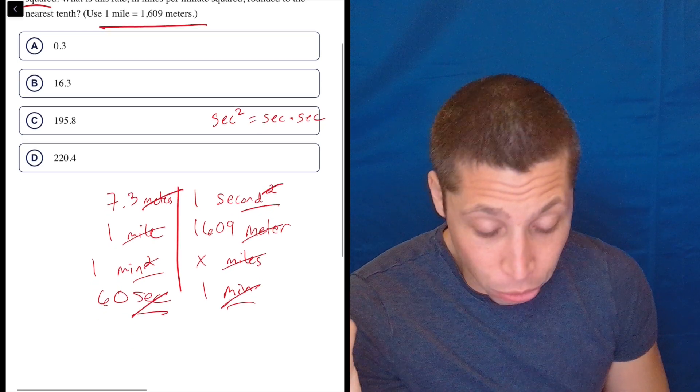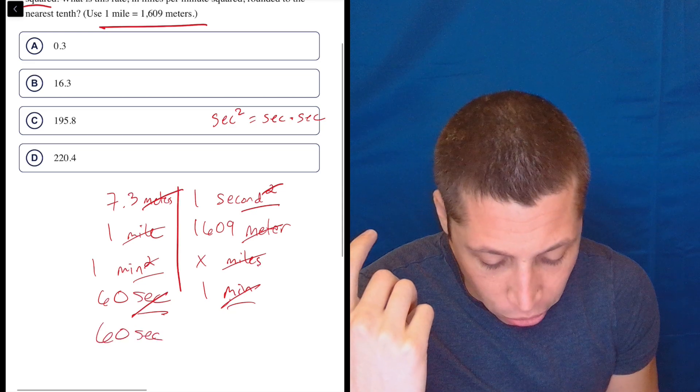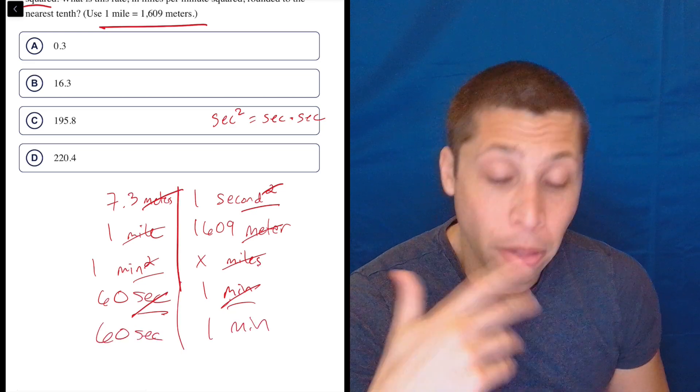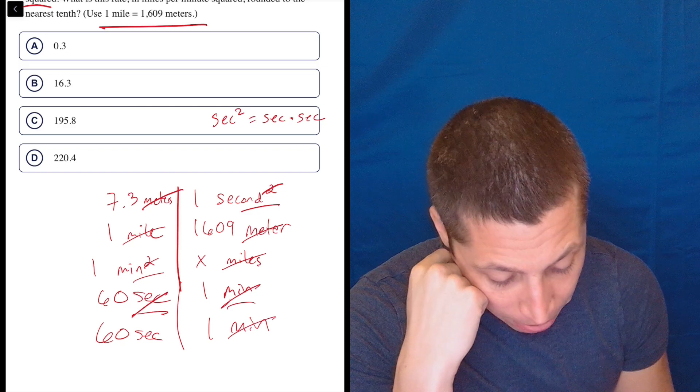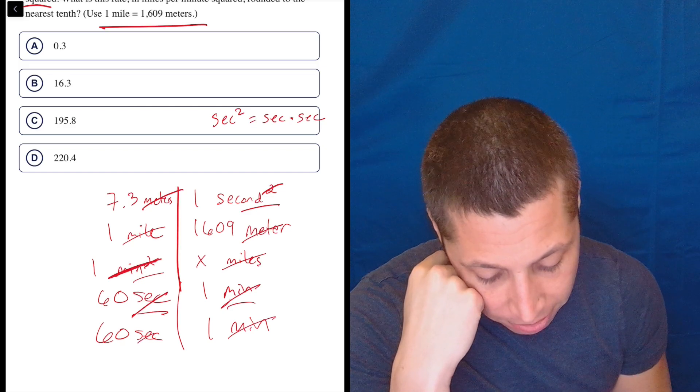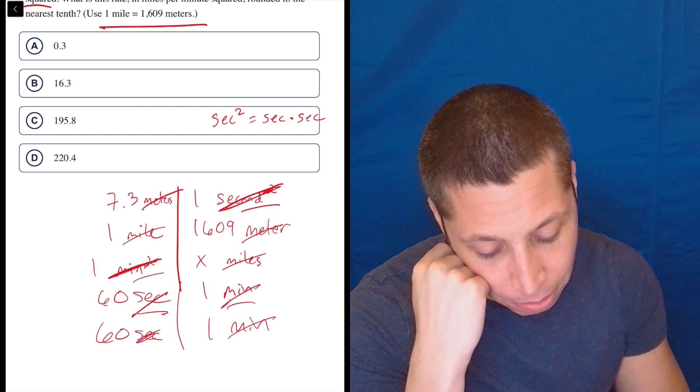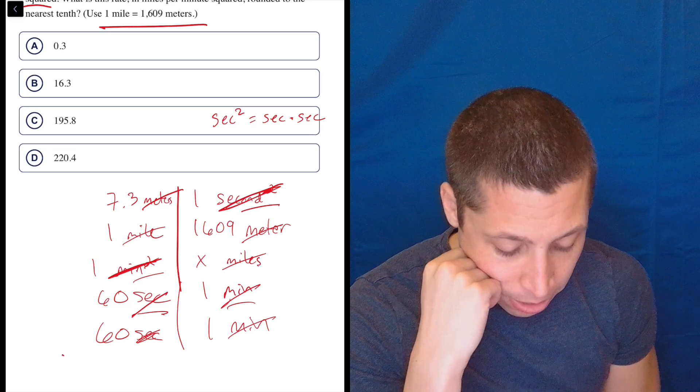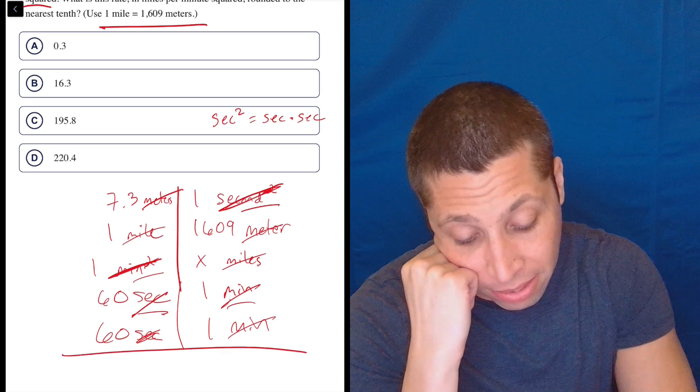So the solution is simple. We just do the same conversion twice because I need to get rid of another seconds and another minute. So now minute cancels completely out with the minutes. Seconds cancels completely out with the seconds. And now look, everything, all the units are gone. So now I know what I'm basically done.